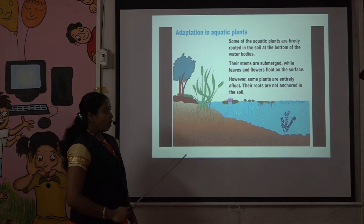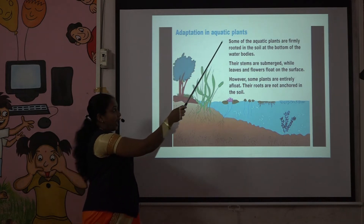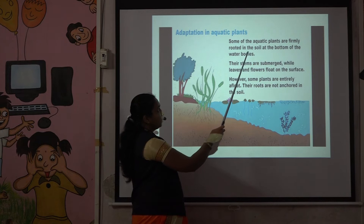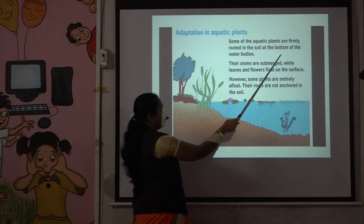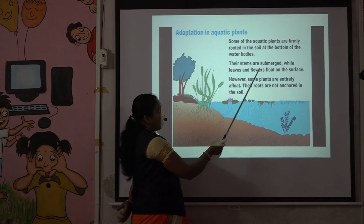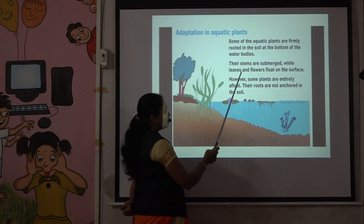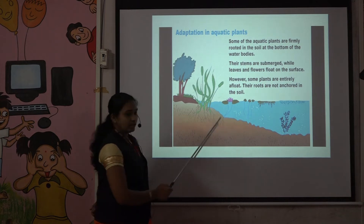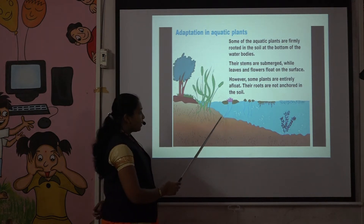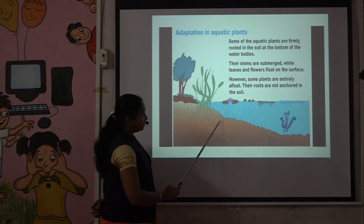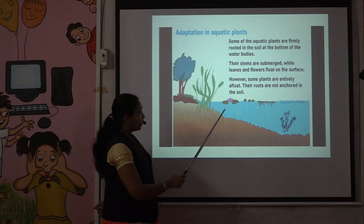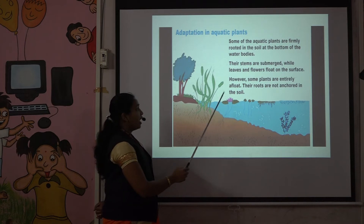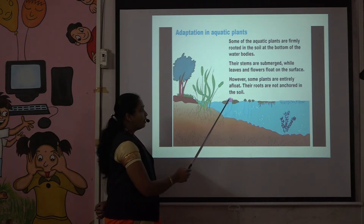Now let's talk about adaptations in aquatic plants. Some aquatic plants are firmly rooted in the soil at the bottom of the water body. Their stems are submerged, but their leaves and flowers float on the surface. For example, the lotus — its root is firmly rooted in the soil, the stem is submerged deep in the water, and we see only the flower and leaves.